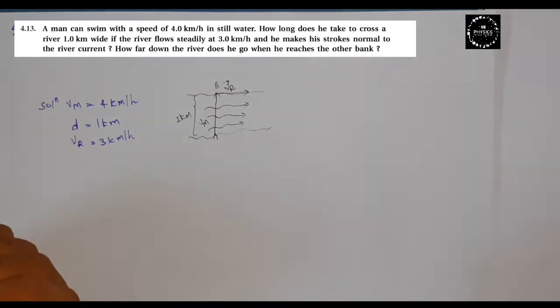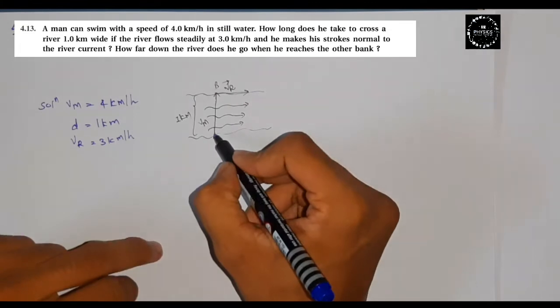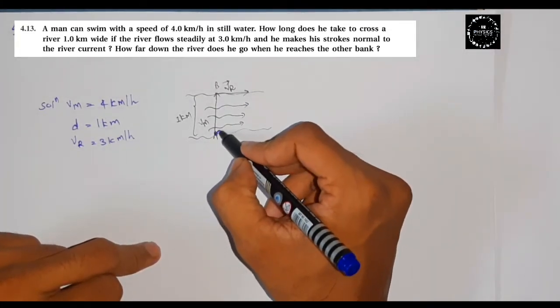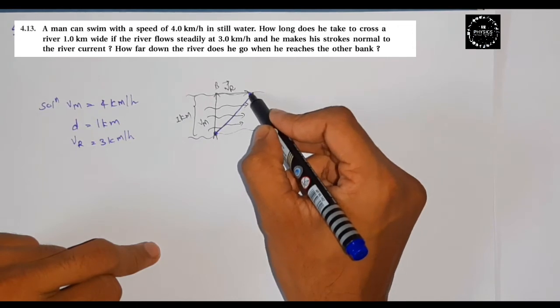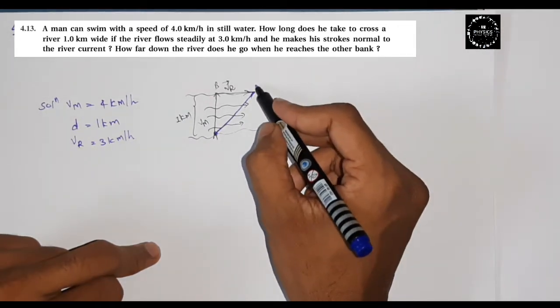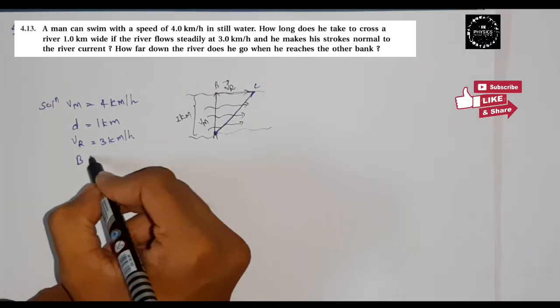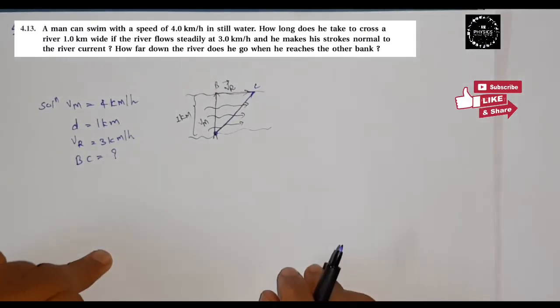The man will start from here, then the flow will affect his path in this direction. So point C will be considered, and BC will be defined - this distance will be what we need to find.